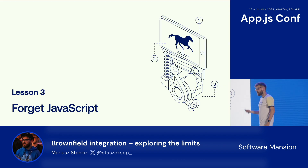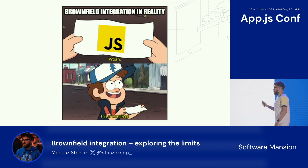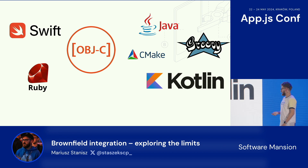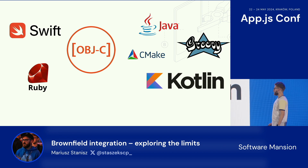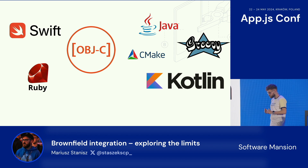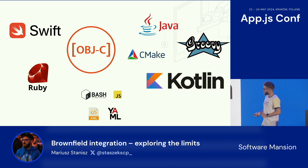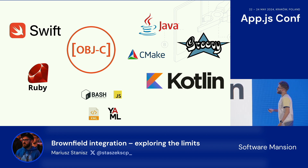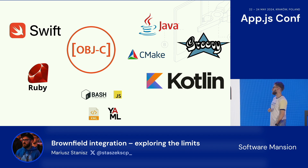Lesson number three: forget JavaScript. Really. Brownfield integration is not about JavaScript. If you work with iOS, you'll be using Objective-C, Swift, and Ruby for the Podfile. For Android: CMake, Kotlin, Java, and Groovy for build.gradle. There's a bit of JS and Bash and YAML, but mostly for CI. I haven't written much JavaScript since I started working with brownfield — but it makes you a better developer and gives you an understanding of how native builds work.